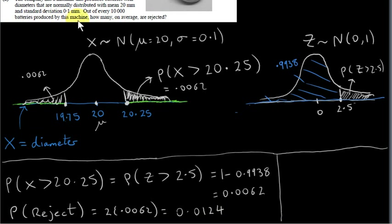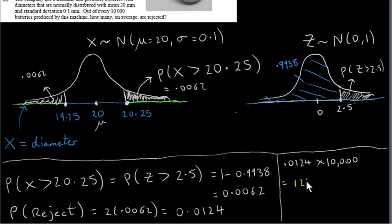Out of every 10,000 batteries produced by this machine, how many on average are rejected? The probability that any one particular battery is rejected is 0.0124. So the expected number of batteries rejected from a population of 10,000 is 0.0124 multiplied by 10,000 — we just move the decimal point four places — giving 124 batteries. On average, 124 batteries will be rejected, those falling outside the tolerance values of 19.75 and 20.25.